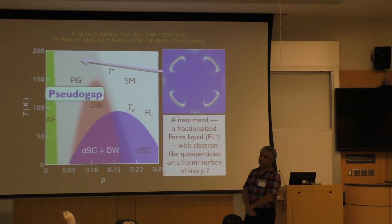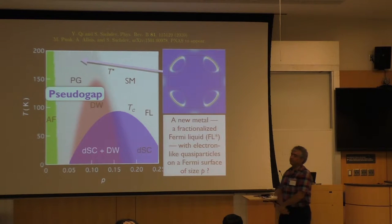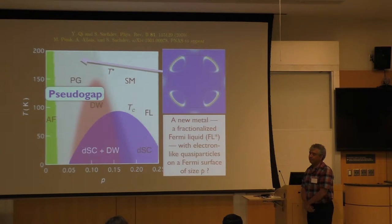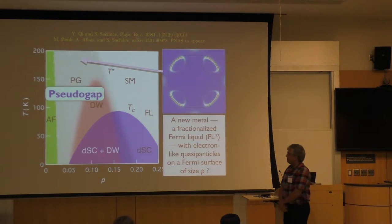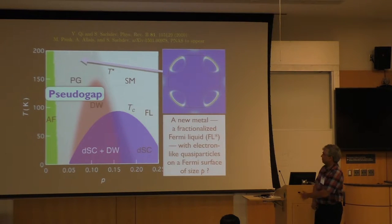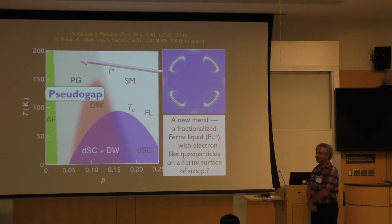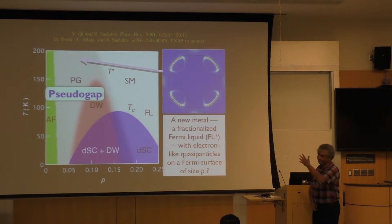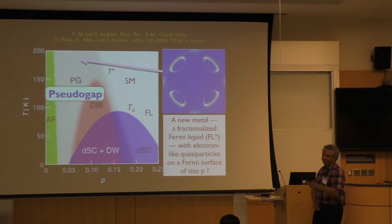Question: Is it easy to explain why you get the phase transition to the antiferromagnet as you change P? Answer: Yes. So that's the kind of model that in fact Yangtze was working on. I gave you this dimer picture, but there are many other approaches which didn't address those issues.